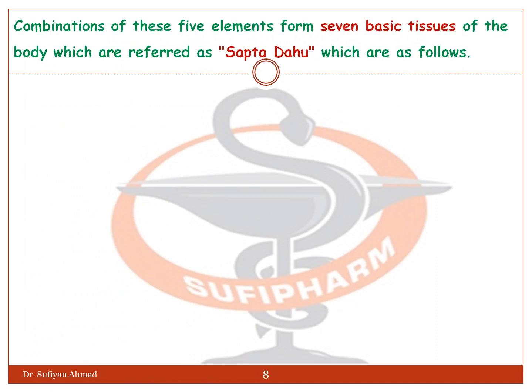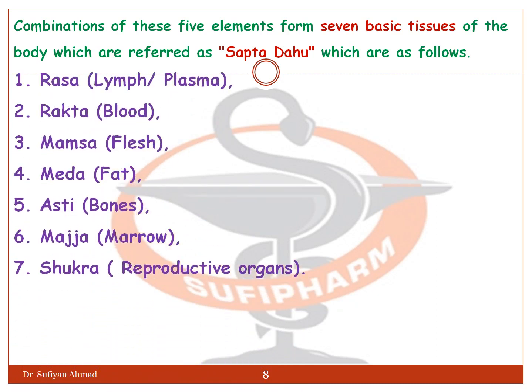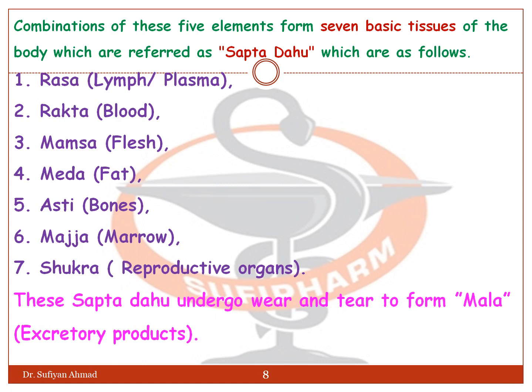The combination of these five elements forms the seven basic tissues of the body, referred to as Sapta Dhatu, which are: Rasa means Lymph and Plasma, Rakta means Blood, Mamsa means Flesh, Meda means Fat, Asthi means Bone, Majja means Marrow, and Shukra means Reproductive Organ. These Sapta Dhatu undergo wear and tear to form Mala, means excretory products.